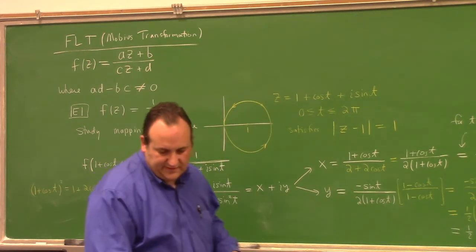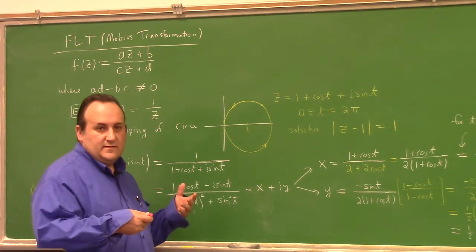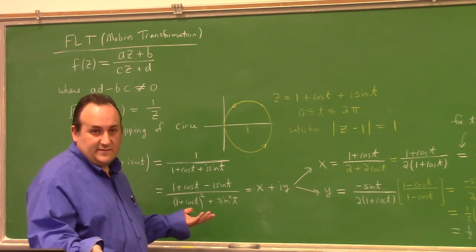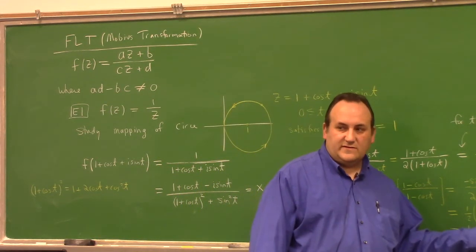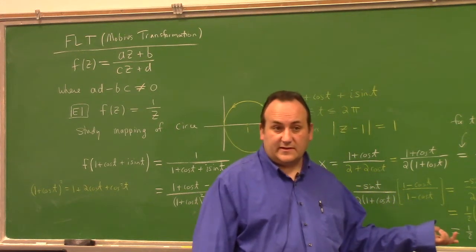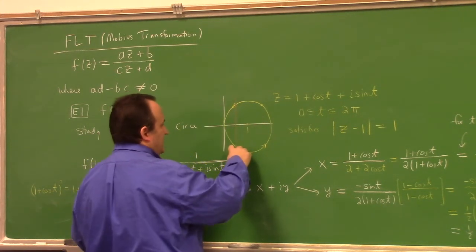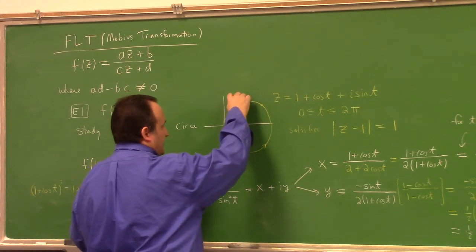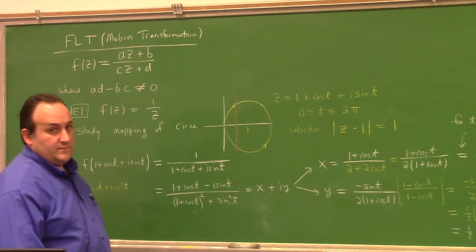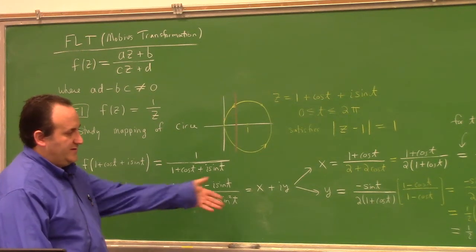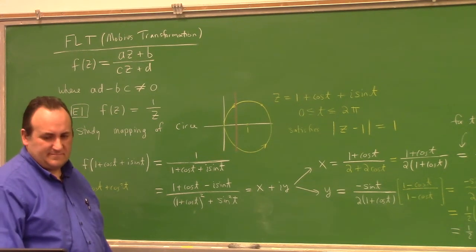So the image curve has x equal to one-half. What can y be? If you sort through the different values that this expression takes as t ranges from 0 to π, you see y goes from minus infinity to infinity. So that circle maps to this vertical line x = 1/2, where y ranges over all values.